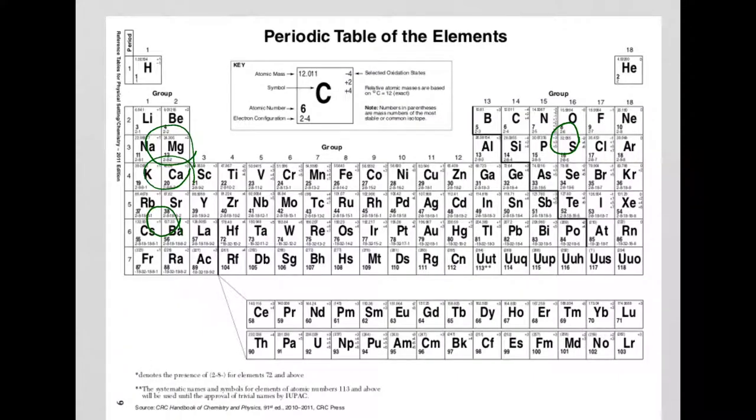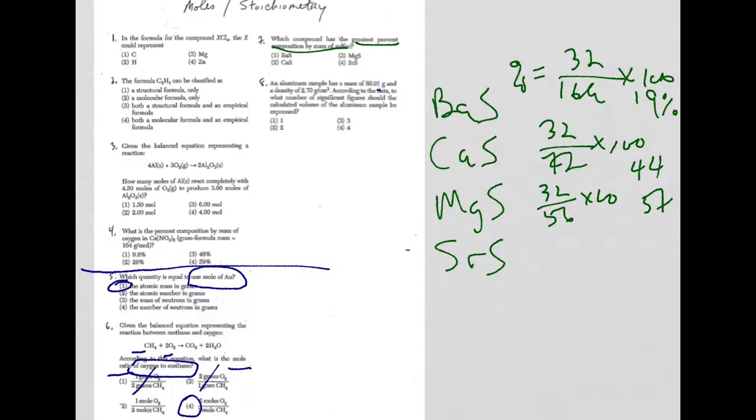And then finally for strontium. Strontium is here in the middle. Strontium plus the sulfur, I think it's 120. So it's 32 over 120 times 100, which is about 27%.